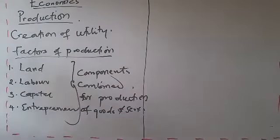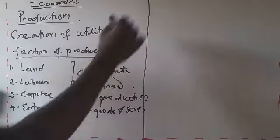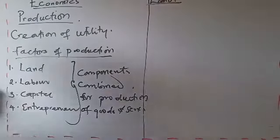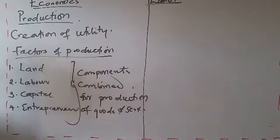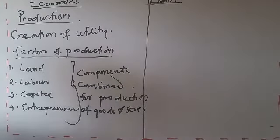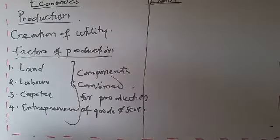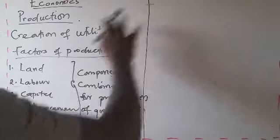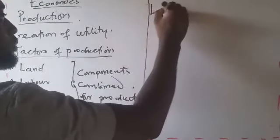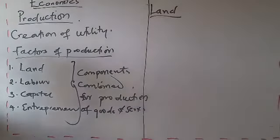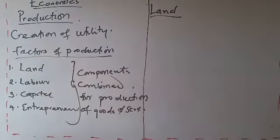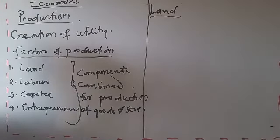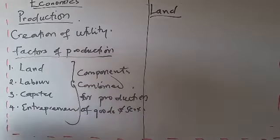So they are components that we bring together in order for production to take place. The first one here, land. When we talk about land in economics, land in economics actually goes beyond the uppermost layer of the earth surface that we know as a layman. Land in economics consists not only the uppermost layer of the earth surface, but also all other natural resources that are in the land, in the sea, in the mountain, in the hill, in the forest.